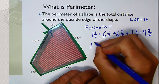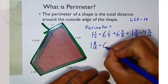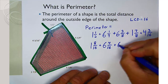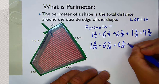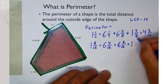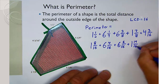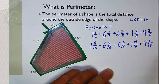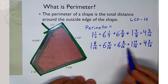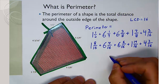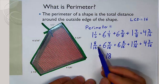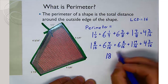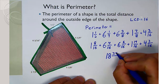One and one half is one and eight sixteenths. Six and a quarter is six and four sixteenths. Six and three eighths — multiply top and bottom by two — that's six and six sixteenths. One and seven eighths — multiply top and bottom by two — is one and fourteen sixteenths. And four and three sixteenths we don't need to change at all. So we add up the whole numbers: one plus six plus six plus one plus four equals eighteen. And if we add up all our numerators — eight plus four plus six plus fourteen plus three — we get thirty-five sixteenths.